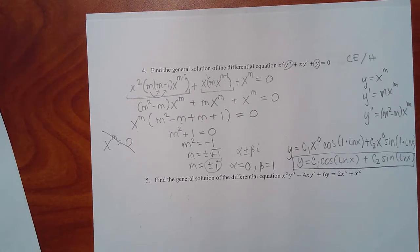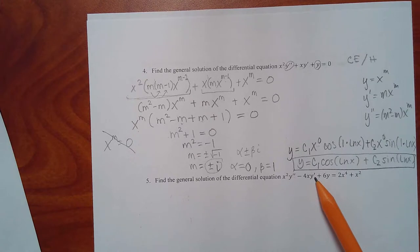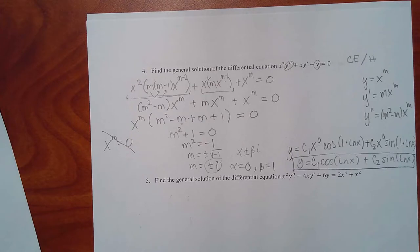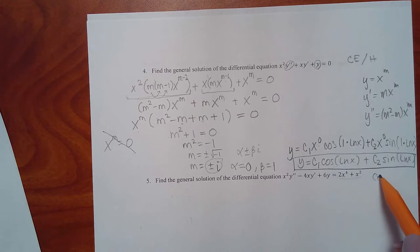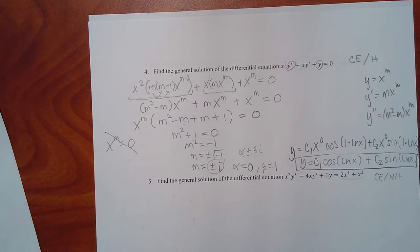Problem five: is it constant coefficient or Cauchy-Euler? There's x squared with a double prime, x with a single prime, and no x with no primes — that matches the Cauchy-Euler definition. But this one is non-homogeneous since the right side is not zero. So it's Cauchy-Euler non-homogeneous.